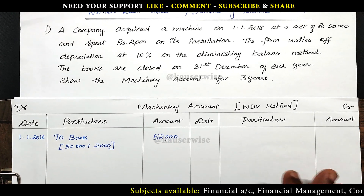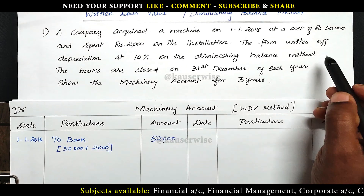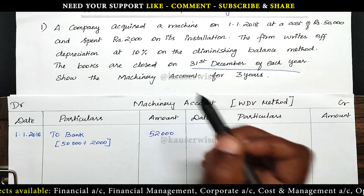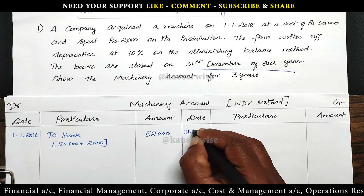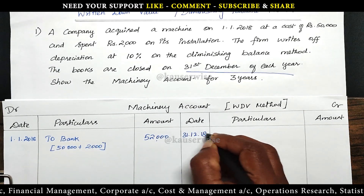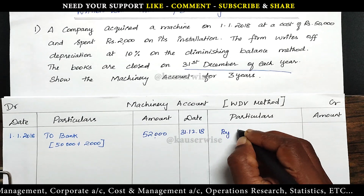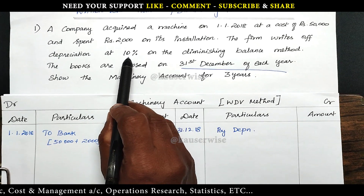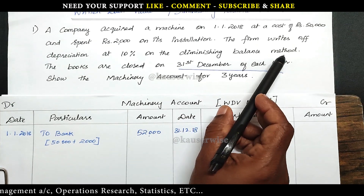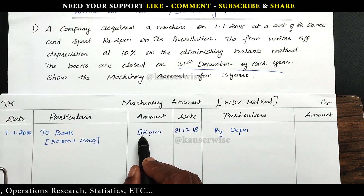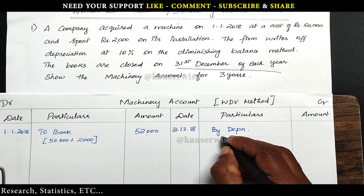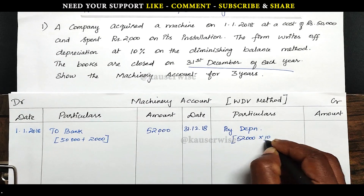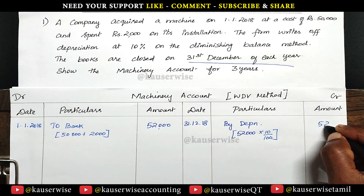Now we have to calculate depreciation at the end of the year. According to this problem, 31st December each year they are closing the account. So on 31st December 2018, by depreciation. The percentage is 10%, on the diminishing balance method. For the first year: 52,000 into 10% = 5,200.